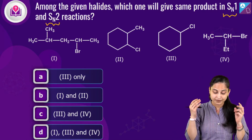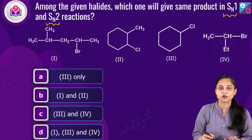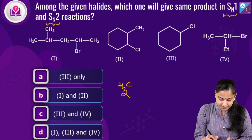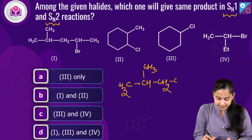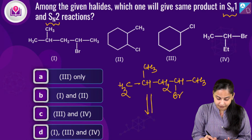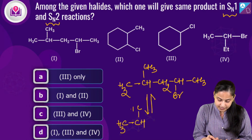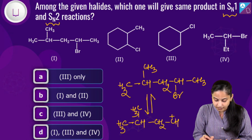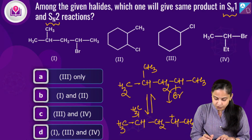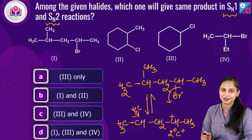Now let's examine each option to find the compound that gives the same product in both SN1 and SN2. For the first option — CH₃CH(CH₃)CH₂CHBrCH₃ — in SN1, the leaving group (bromine) departs first, forming a carbocation: CH₃CH(CH₃)CH₂CH⁺CH₃. This is a secondary (2°) carbocation. The question is whether rearrangement is possible here.